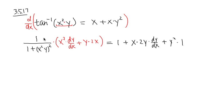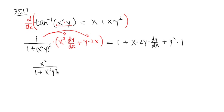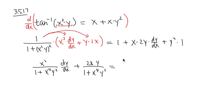Distributing the front factor inside: the first part gives x squared over 1 plus x to the 4th y squared, times dy/dx. The second part gives plus 2xy over 1 plus x to the 4th y squared. This equals 1 plus 2xy dy/dx plus y squared on the right-hand side.